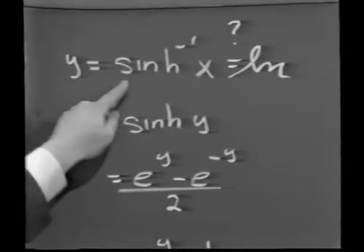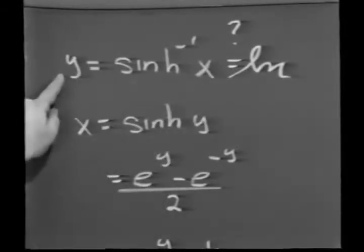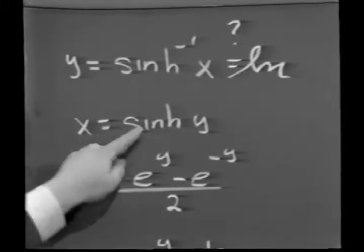In other words, starting out with y equals inverse sinh x, notice that by the property, the basic definition of inverse functions, I can now write that x equals sinh y.